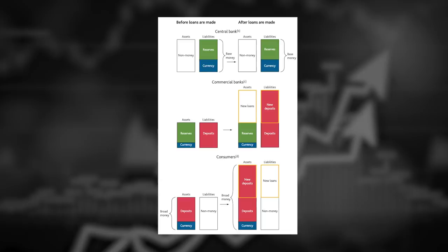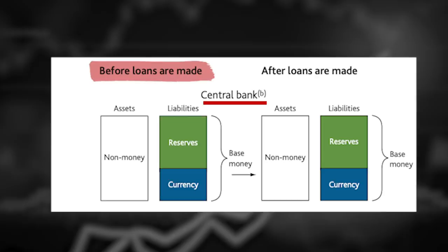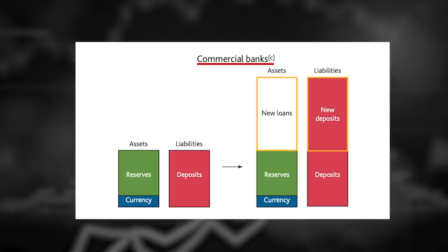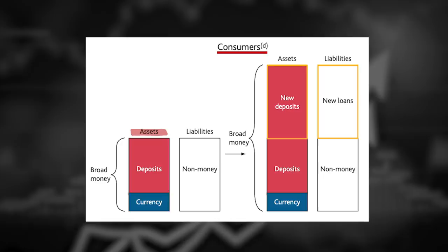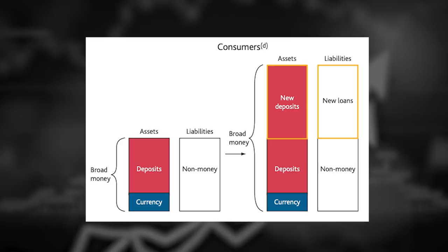So let's look at the balance sheet of the central bank, the commercial banks, and the consumers as an aggregate total. Before the loans, the central bank has the reserves and currency on the liabilities side of their balance sheet. The commercial banks have deposits and assets, as we spoke of earlier. The consumer has the deposits on the asset side of their balance sheet, maybe along with some currency. And notice that the deposits are on the asset side of the consumer's balance sheet, but the liability side of the commercial bank's balance sheet. And the combination between the deposits and the currency is what gives us broad money.